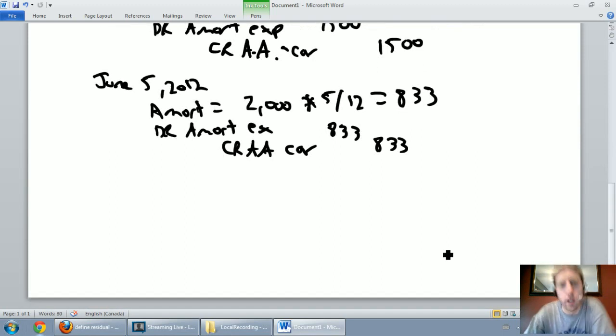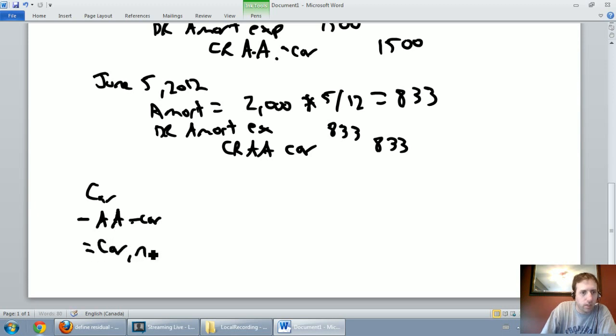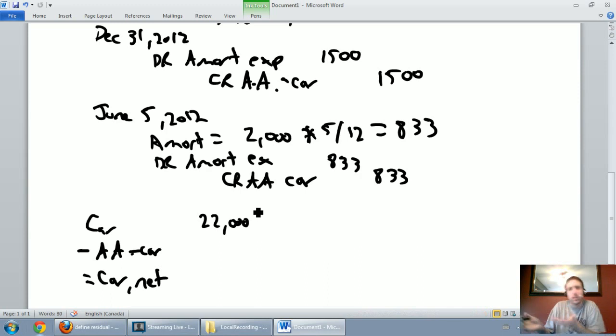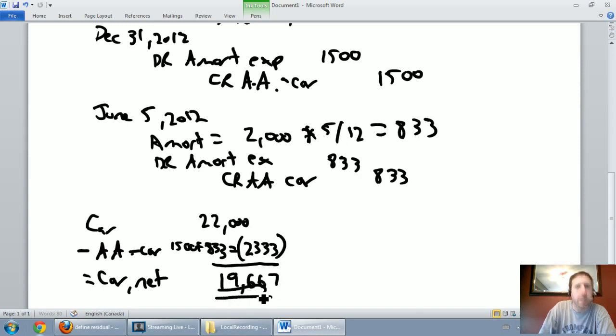Now might be a good time to check in on the value of our car according to our books, the book value of our car. The book value of our car is the cost minus the accumulated amortization. Our car was worth $22,000 when I bought it. My accumulated amortization is $1,500 plus the $833, which is $2,333. According to my records, my car is worth $22,000 minus $2,333 in amortization. My car is worth $19,667. That's the net book value of my car.